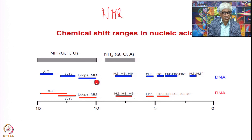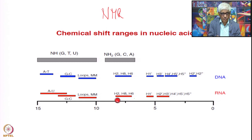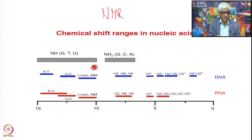With regard to the imino protons: NH protons are the imino protons, and in this area we also have the NH2 groups. G, C, and A all have NH2 groups — we have seen that when we talked about the various base pairing schemes. These NH2 groups also appear in this region, around 7.5 ppm. From about 7.5 to 8.5 ppm you have the bases and also the amino groups of G, C, and A.